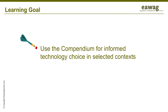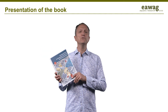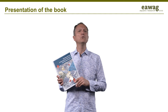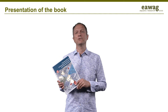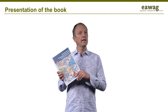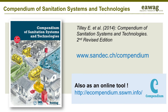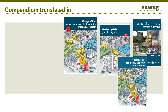In this video, you will learn how to use the compendium for informed technology choice in selected contexts. I will be introducing you to the Compendium of Sanitation Systems and Technologies, a widely used resource document that orders and structures tried and tested sanitation technologies in one concise document. The second edition was published in 2014 and is available in digital form, and has since been translated to Spanish, French, Arabic and Russian, with more languages to follow.